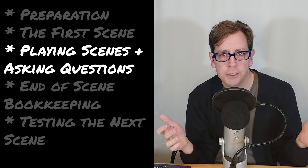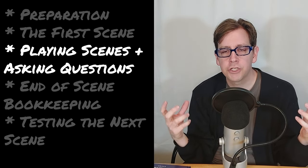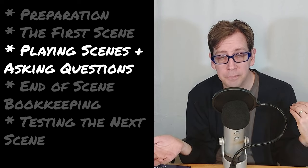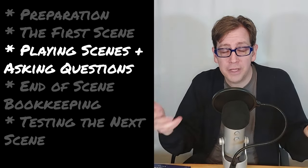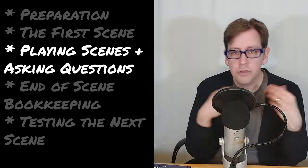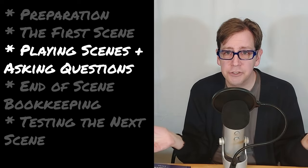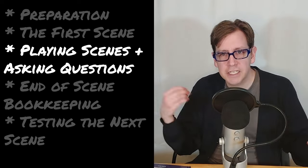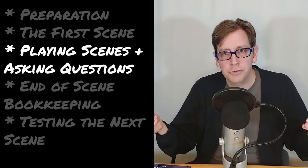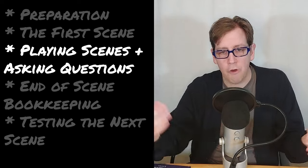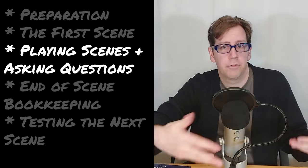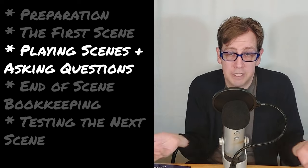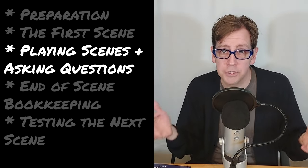Finally, there are system questions. This is when our character tries to do something and we need to know whether they succeed or fail. That's when we turn to our role-playing game system. Usually this involves rolling a die to make a skill check, but it depends on the system you've chosen. Follow the rules, follow the procedures, roll the dice, and get your answer: did my character succeed or fail at this particular task?